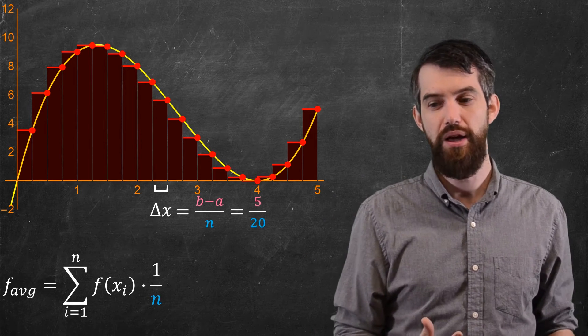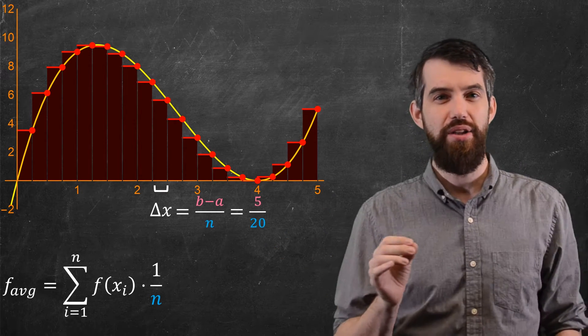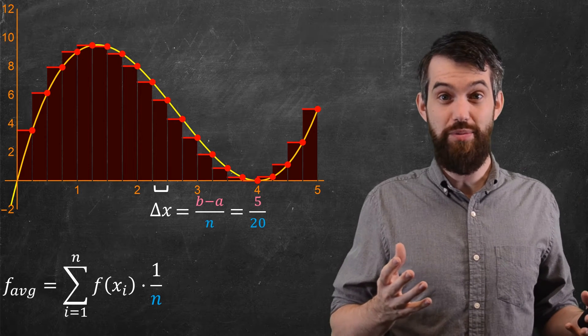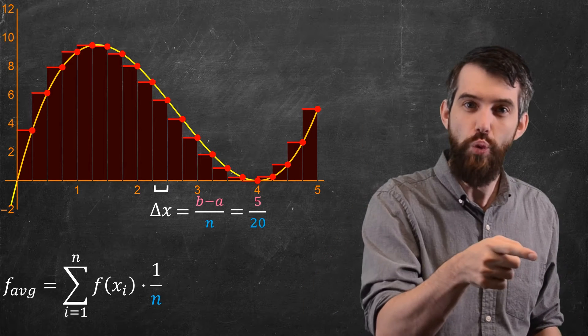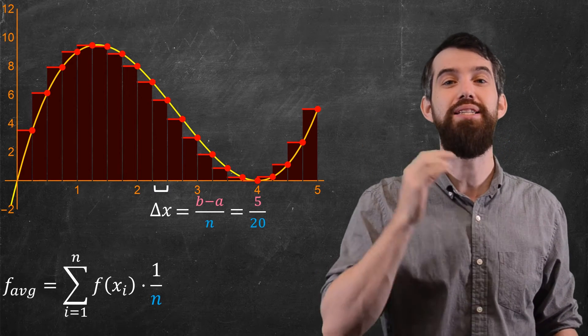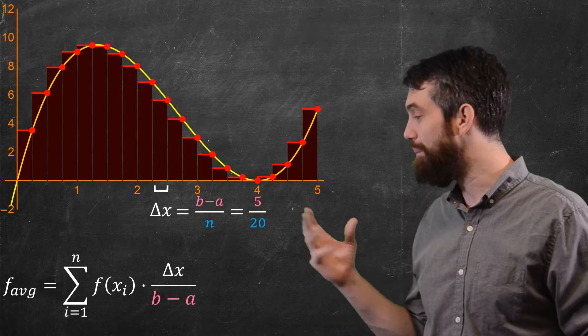That's dividing out by the number I have. But this 1 over n here, this looks familiar to us, that we have a 1 over n in my delta x formula. Indeed, I can replace the 1 over n with simply delta x divided by b minus a.